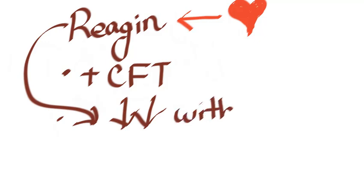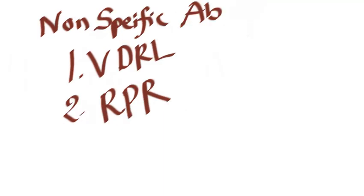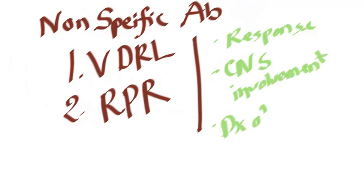Both antitreponemal antibody and nonspecific Reagin are used in the serological diagnosis of syphilis. Non-specific antibody tests are of two types: VDRL and RPR. They can be used to assess the response to therapy, to detect central nervous system involvement, and as an aid in the diagnosis of congenital syphilis.